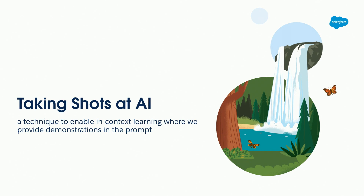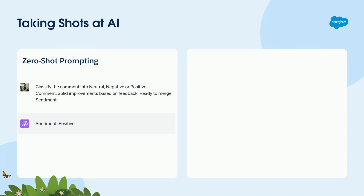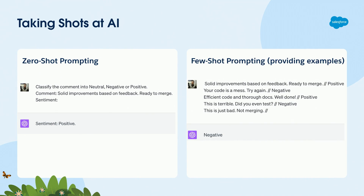The last technique is providing examples to AI — something called the few-shot technique. By default, if you explain to AI in natural language what you want to achieve — 'classify the comment for me into neutral, negative, or positive; my comment is solid improvement based on feedback' — you get the response 'positive' plus lots of text. For development, another approach is to just provide three examples: 'Solid improvement based on feedback — positive. This is just terrible — negative. This is just bad — not merging.' Please notice I'm not saying what I want to achieve, there is no 'classify for me' request, just examples. But AI can find the pattern and give me the answer 'negative.' It's extremely powerful when I want to generate metadata and the kinds of things which are easily affected by what we call hallucinations.